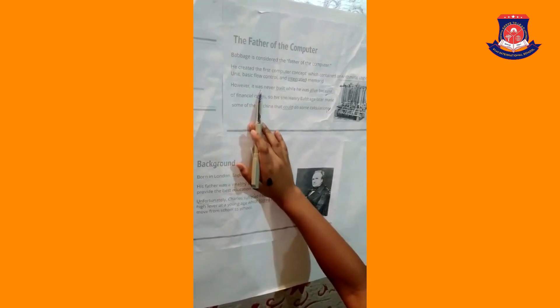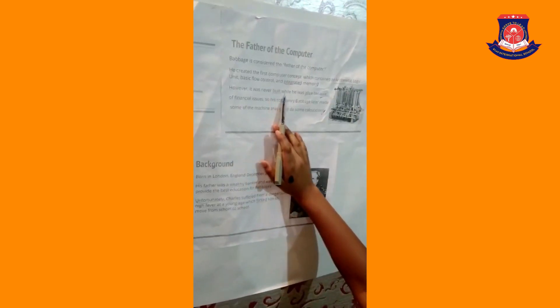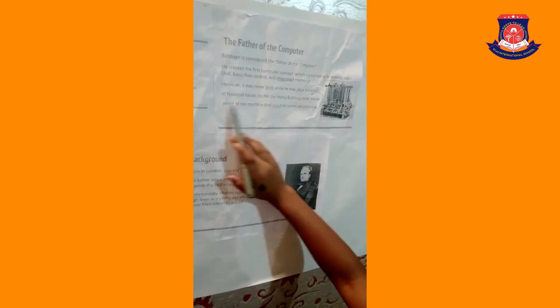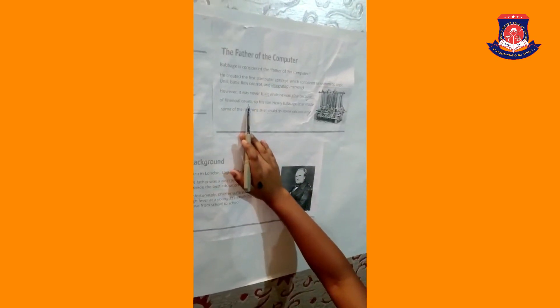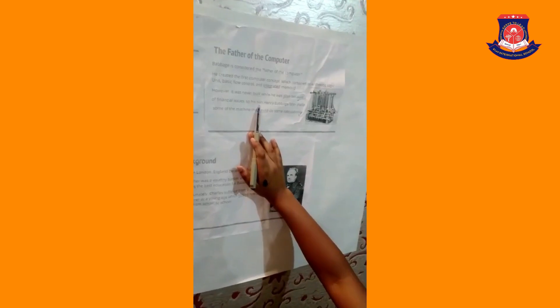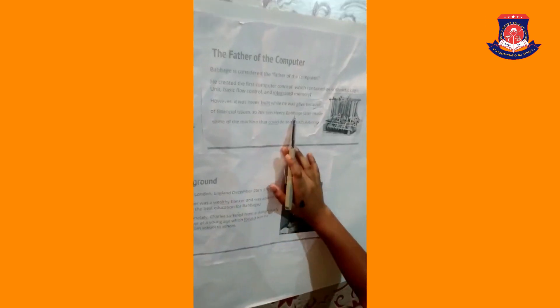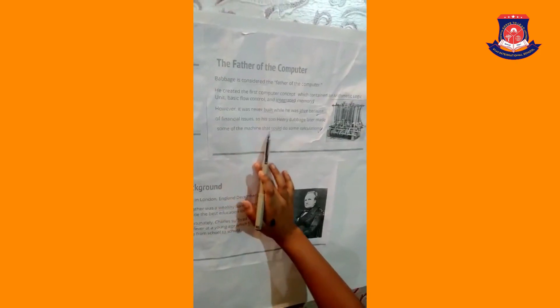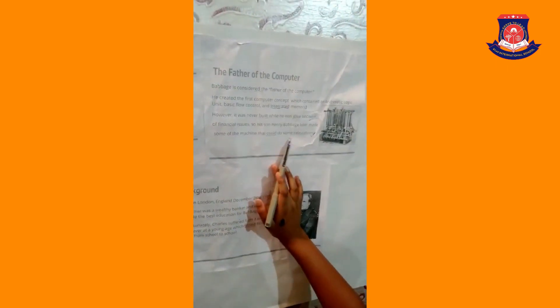However, it was never built while he was alive because of financial issues. So his son Henry Babbage later made simplified versions of the machine that could do some calculations.